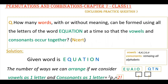Hello everyone. Today I am going to show how to find the number of words in this problem. The problem is: how many words, with or without meaning, can be formed using all the letters of the word EQUATION at a time, so that the vowels and consonants occur together? The given word is EQUATION.